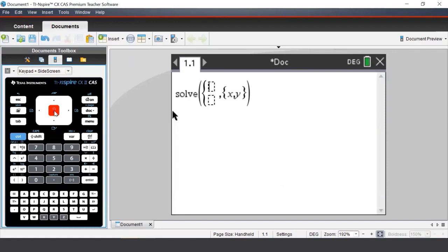Once you press ok we can enter in our first equation 2x plus 3y equal to 14. To enter in our second equation we can press the down arrow on our handheld and enter in 2x minus y equals 6 and press enter.